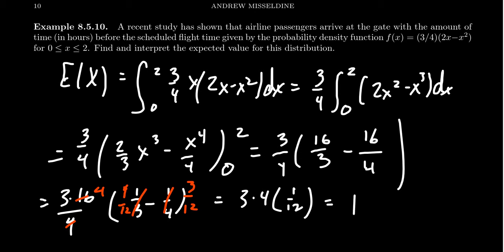This simplifies to be 1, and there are units attached to this thing. This is 1 hour. What this tells us is this result indicates that passengers arrive at the gate on average an hour before the scheduled time of departure. That's how we should interpret this expected value. It tells us what we can expect, what average is all about. It doesn't tell us what will happen, there's no guarantee, but it gives us an expectation.